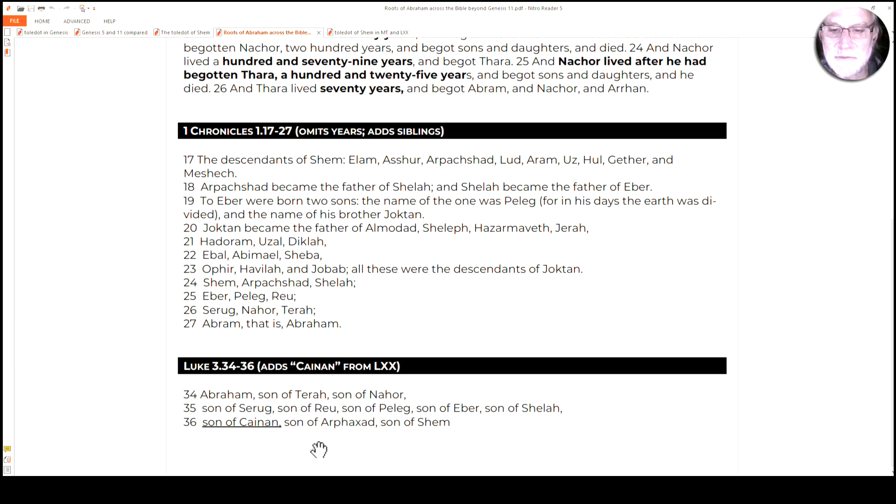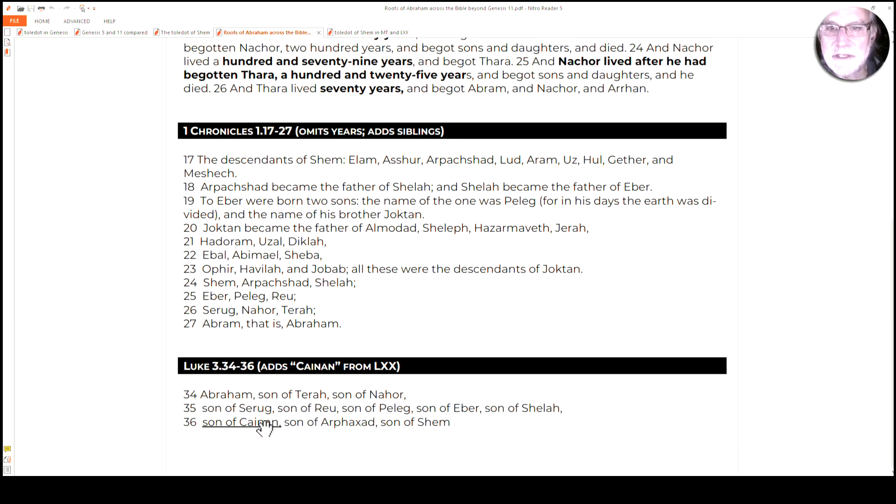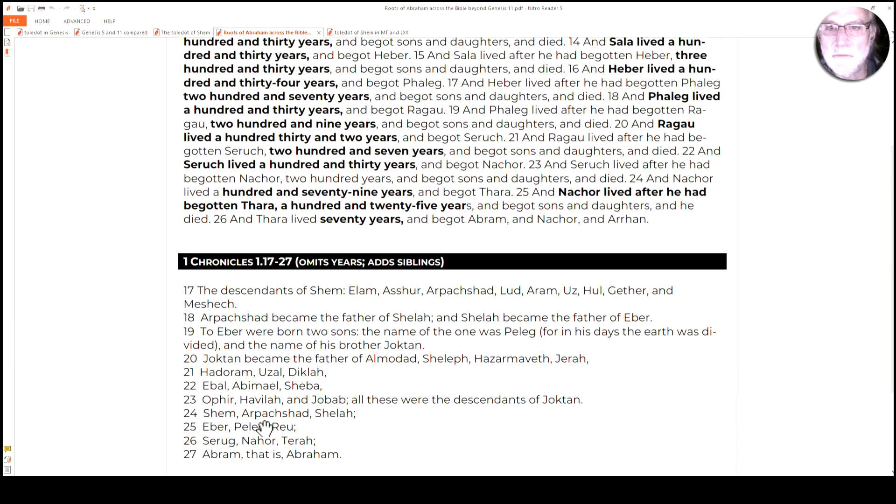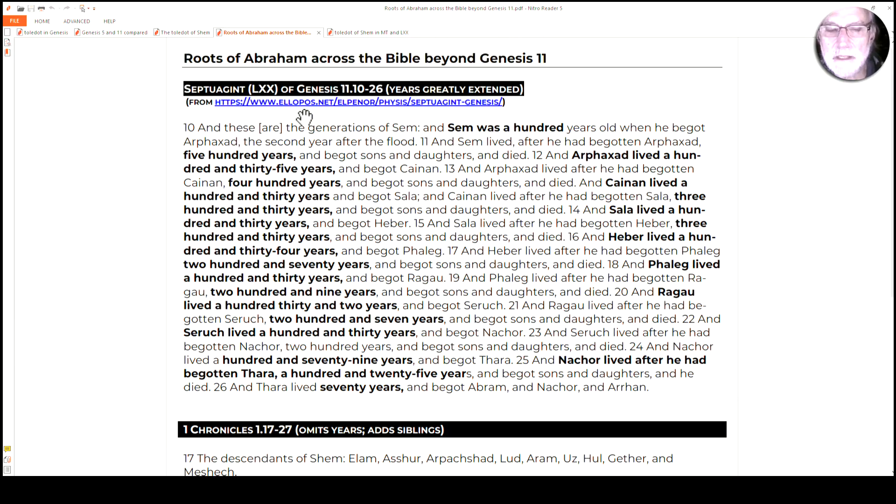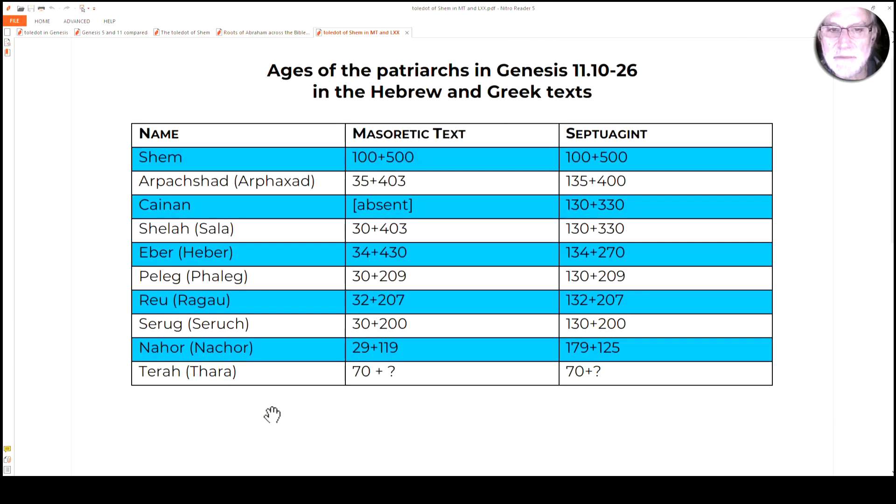And then finally in the New Testament, we have the Luke version, not the Matthew version, who traces Jesus simply back to Abraham. It doesn't go before that. But Luke has these following the Septuagint, which adds Canaan here to the one that was not in the Hebrew version. And that leads us to see it this way.